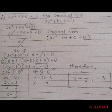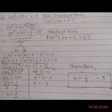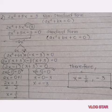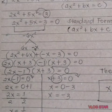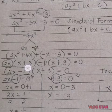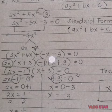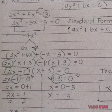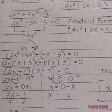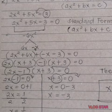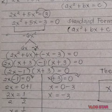Copy 2x squared plus 6x, then negative x, then bring down negative 3 equals 0. By factoring the common monomial factor from 2x squared plus 6x, it becomes 2x times the quantity x plus 3. In negative x minus 3, since there is no common monomial factor other than 1, we write negative 1 to make it negative 1 times x plus 3. As you can see, we have x plus 3 in both groups.